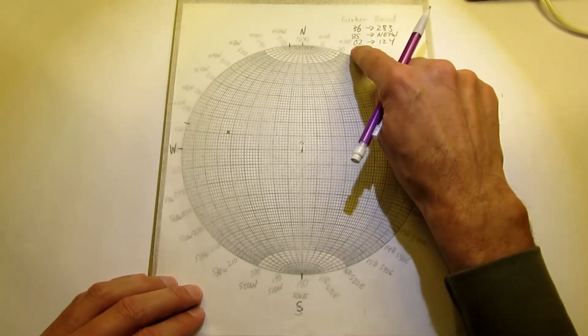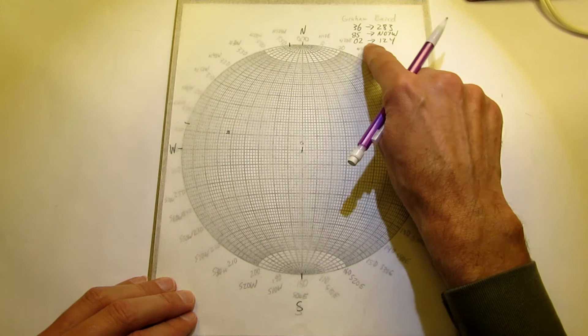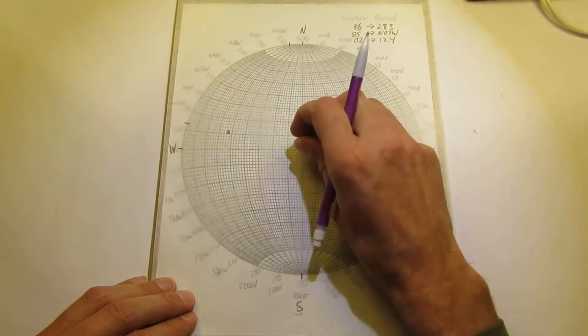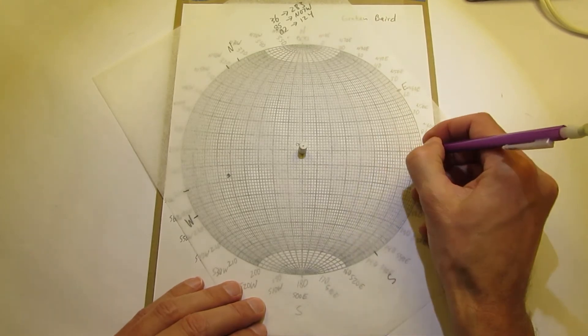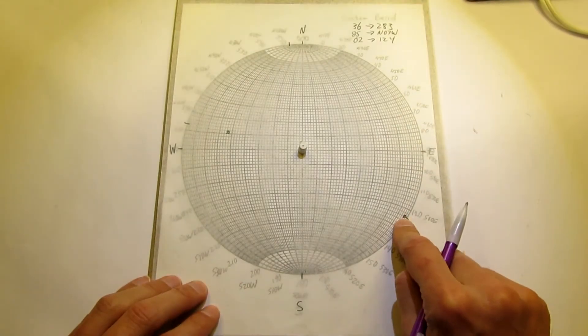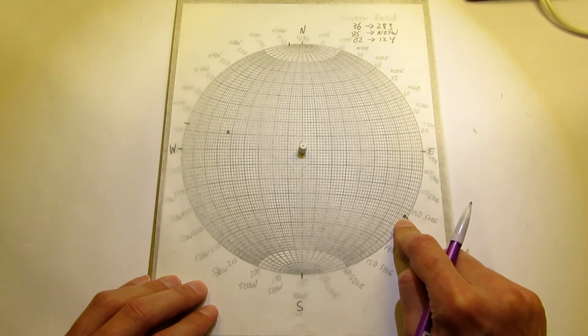And then the last one we can see that is a low plunge lineation. And we've successfully plotted it there on the stereo net.